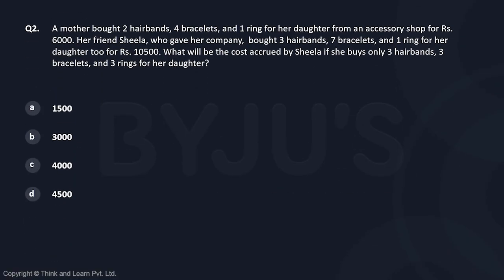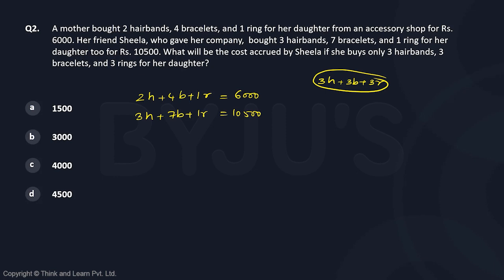This question is based on equations. A mother bought two hair bands, four bracelets, and one ring for rupees 6000. Her friend Sheila bought three hair bands, seven bracelets, and one ring for rupees 10,500. We want to find the cost if Sheila buys three hair bands, three bracelets, and three rings — essentially the cost of one hair band, one bracelet, and one ring.